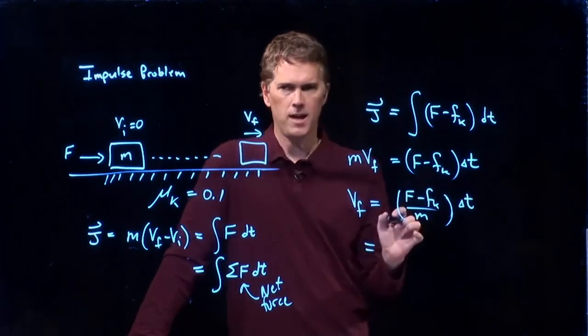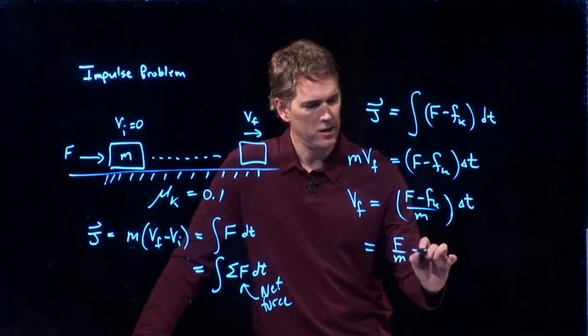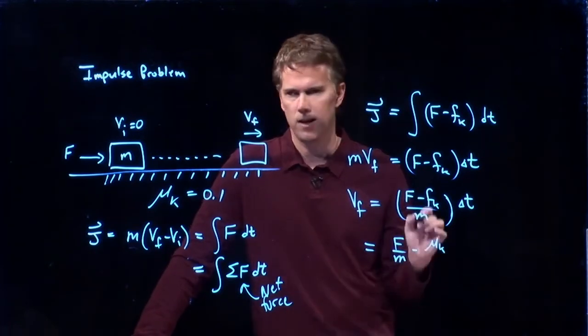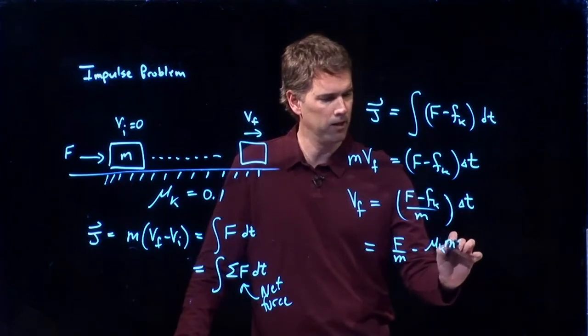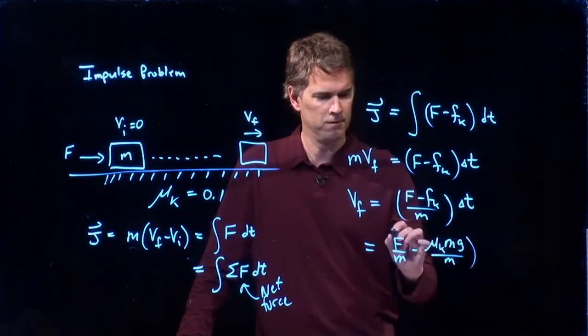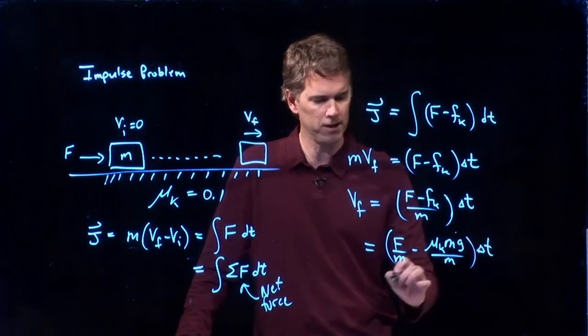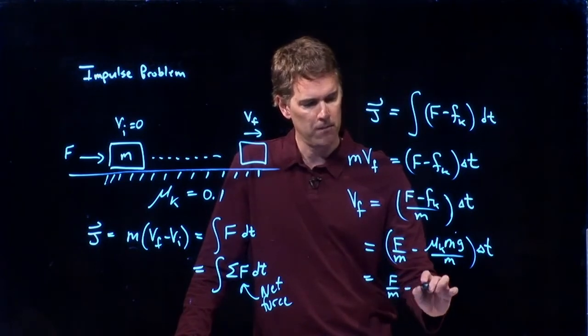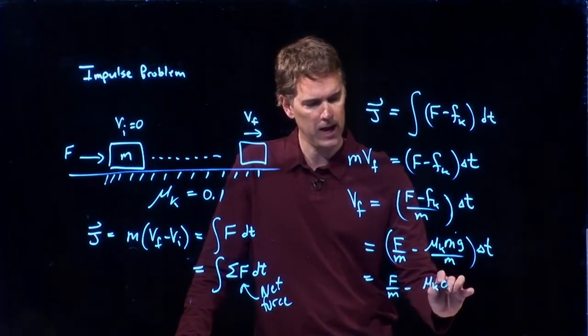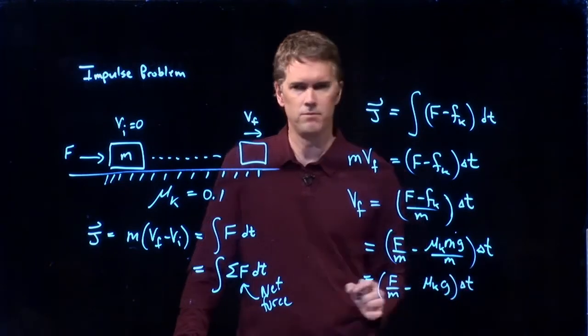But we also know what fk is. fk is mu k times the normal force, which is just the weight of the thing, mg. And so this simplifies a bit. One of the m's cancels out right there. And we get f over m minus mu k g all of that times delta t.